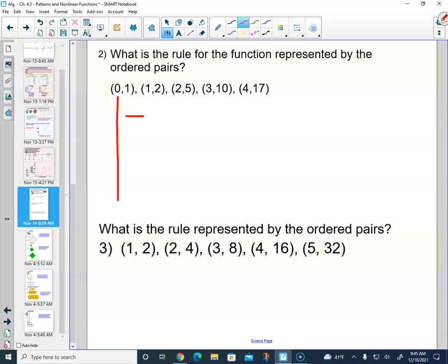Sometimes you can see it written as a table as well. Okay, it just looks like this: 0, 1; 1, 2; 2, 5; 3, 10; and 4, 17. Alright.